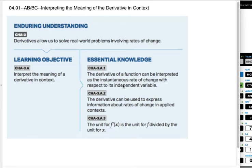Alright, this is AP AB and BC Calculus. We are doing Unit 4, Section 1, which is interpreting the meaning of the derivative in context.